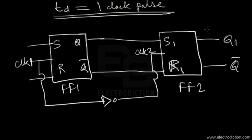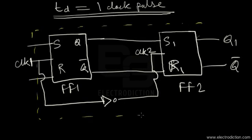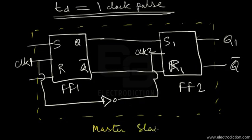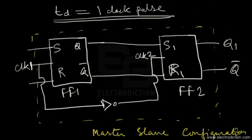So basically what we see here is two SR flip-flops being connected this way. The way that these two SR flip-flops are connected gives us the master-slave configuration. So this, as you can see, is the master-slave configuration of the flip-flops.